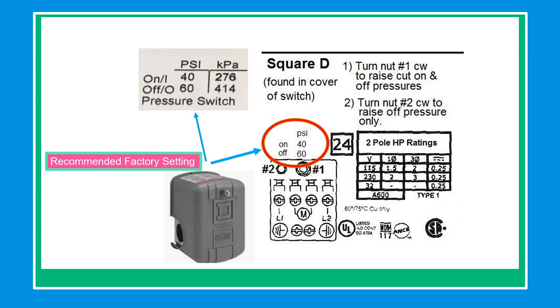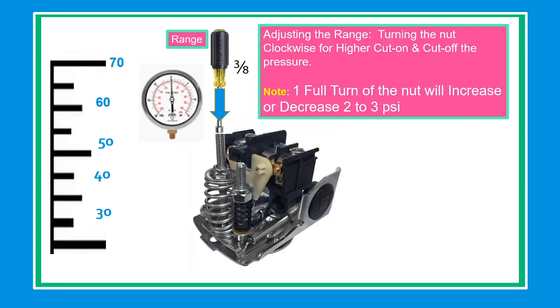By adjusting the center nut, you will lower or raise the range, so you can increase or decrease the pressure by turning clockwise and counterclockwise. Turning the nut clockwise will increase the pressure. Note: one full turn of the nut will increase or decrease the pressure by 2 to 3 psi.